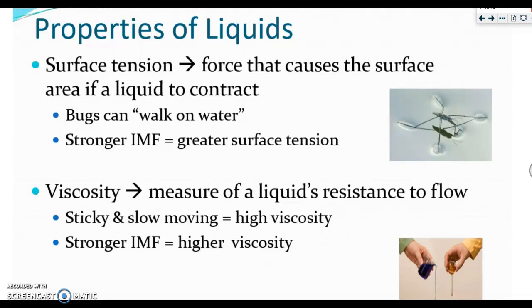A second property of liquids includes viscosity. And viscosity is the measure of a liquid's resistance to flow, so kind of how sticky and slow-moving is it. The slower it moves, the higher its viscosity. So something like molasses is very viscous. Once again, the stronger the IMF, the higher the viscosity. So it's a direct relationship to IMF strength. We will continue this in our next video.